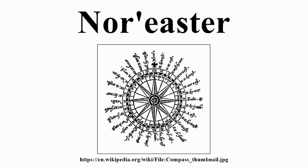A nor'easter is a low-pressure area that often passes just off the New England and southeast Canada Atlantic coastline. Winds in the left forward quadrant rotate onto land from the northeast. The precipitation pattern is similar to that of other extratropical storms.